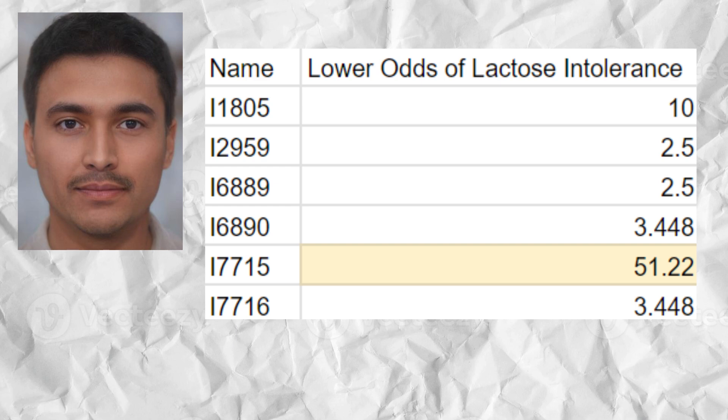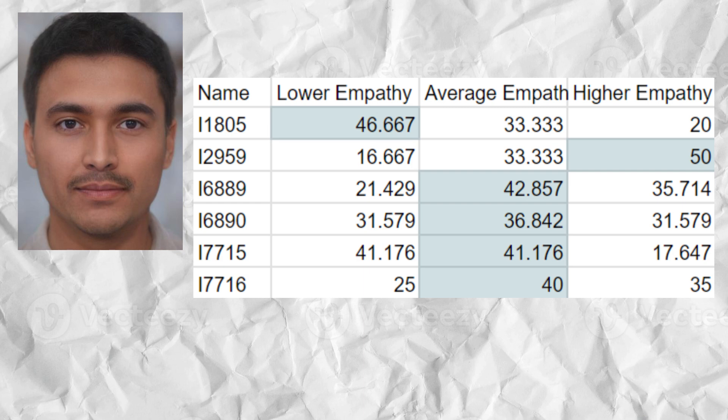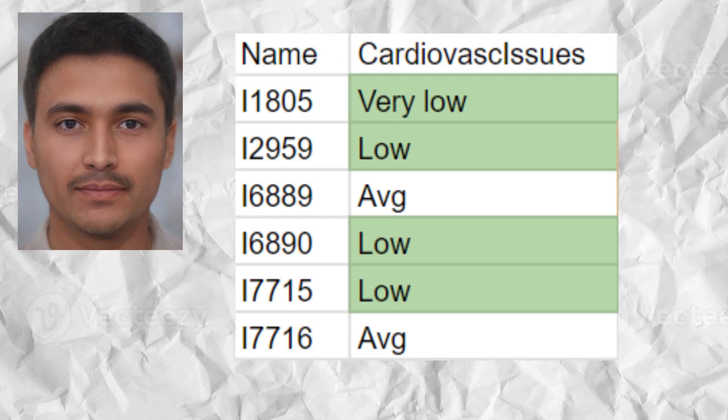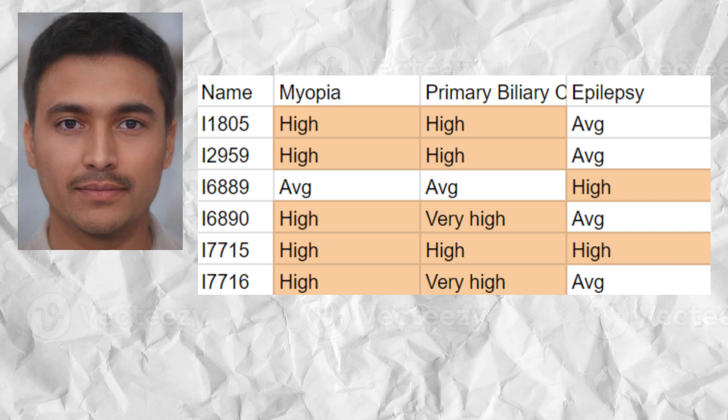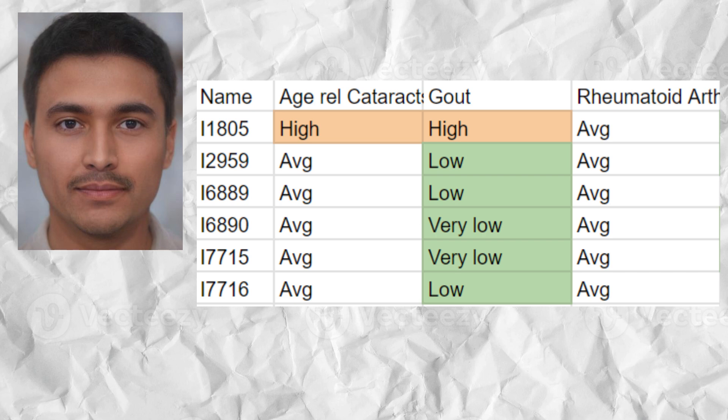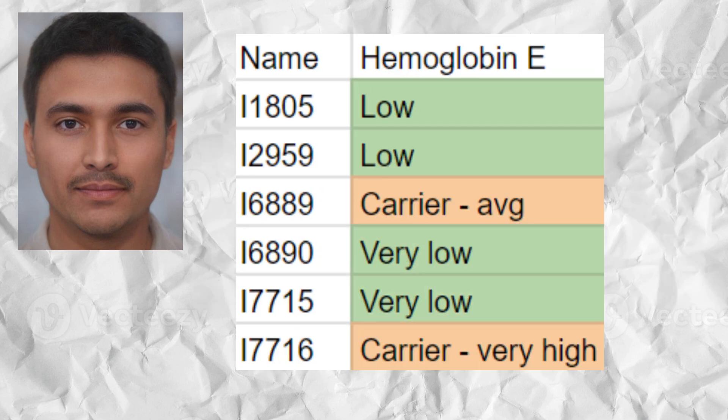One of the six samples is predicted to be lactase persistent. The samples had an average predisposition to empathy based on OXTR genotypes. The samples had low odds of cardiovascular issues overall, high odds of myopia, high odds of primary biliary cirrhosis, high odds of epilepsy, average odds of age-related cataracts, low odds of gout, average odds of rheumatoid arthritis, and average odds of migraine. Two of the six samples were carriers for hemoglobin E disease risk variants, reflecting an average predisposition for this condition.